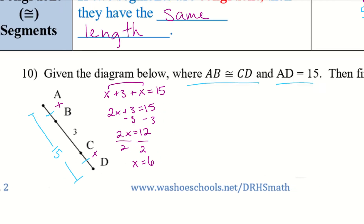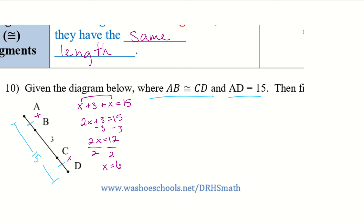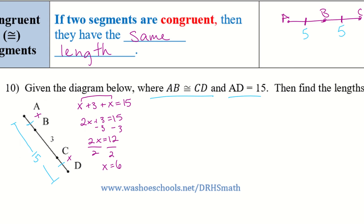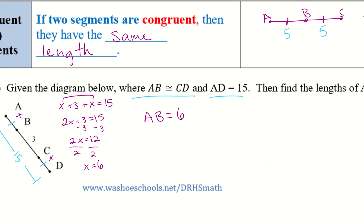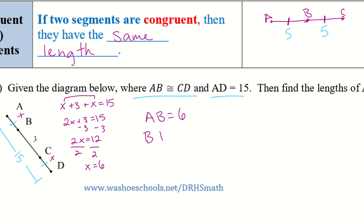It wants us to find AB and BD. AB is X, so AB equals 6. For BD, that equals BC plus CD. BC is 3 and CD is 6, so BD equals 9.